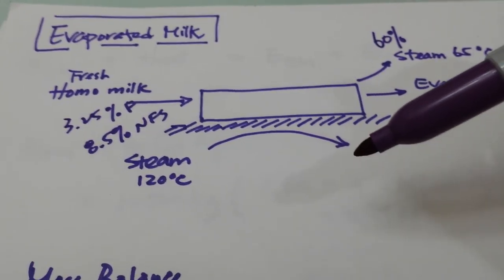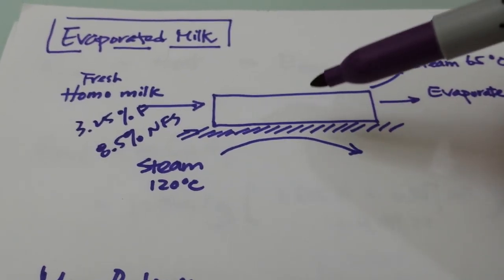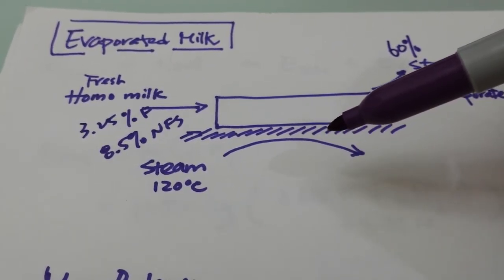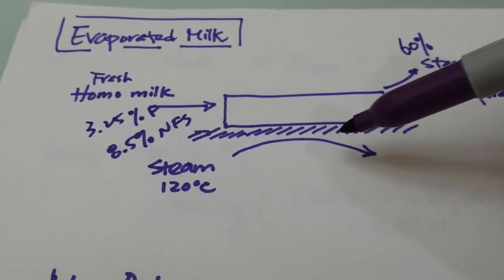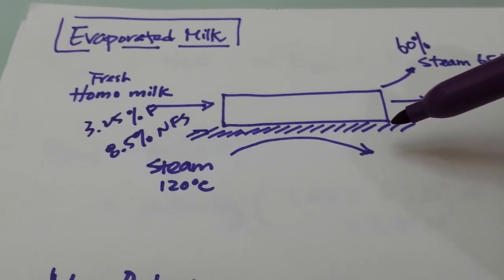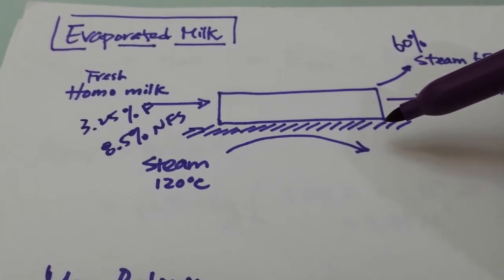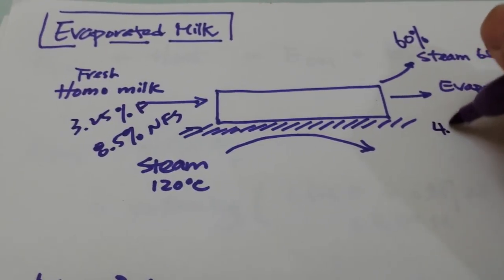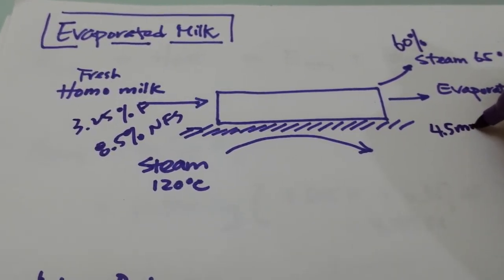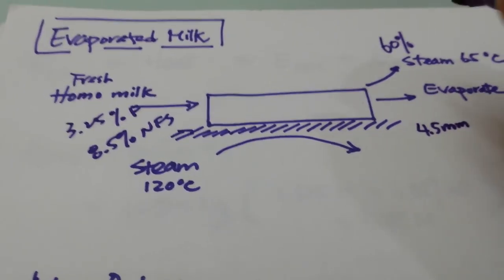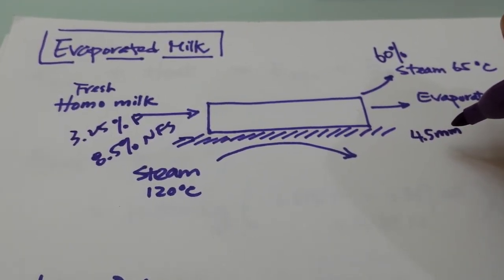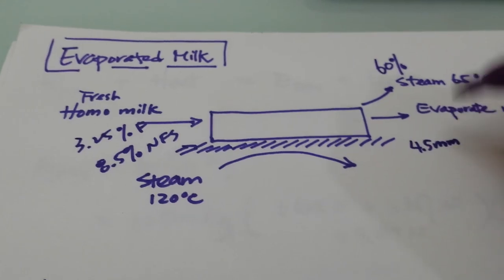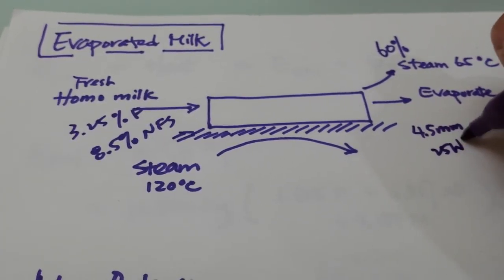There's a heat exchange, there's a metal pipe. So I'm just showing you the pipe here. The pipe has a thickness of 4.5 millimeter and then the heat conductivity is 25 watts per square meter per kelvin.